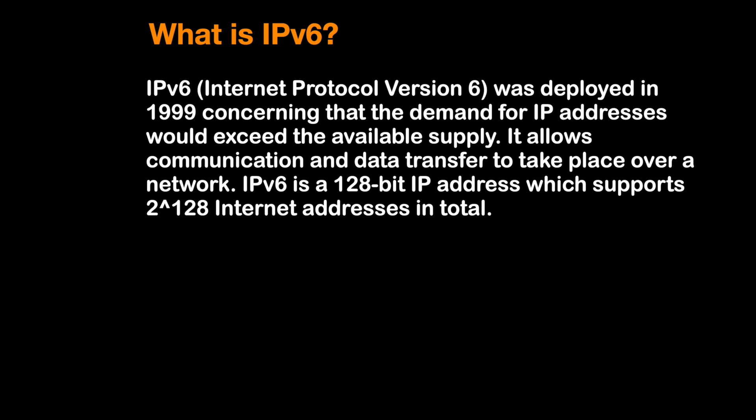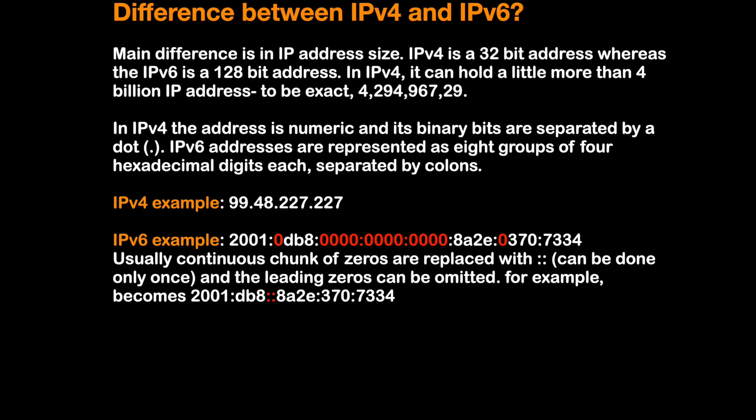Now let's talk about the differences between IPv4 and IPv6. The major difference is the IP address size: IPv4 is a 32-bit address whereas IPv6 is a 128-bit address. IPv4 can hold a little more than 4 billion addresses, and its binary bits are separated by dots. IPv6 addresses are represented as eight groups of four hexadecimal digits, separated by colons.